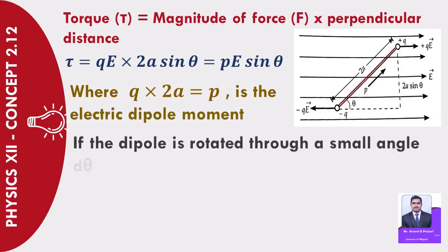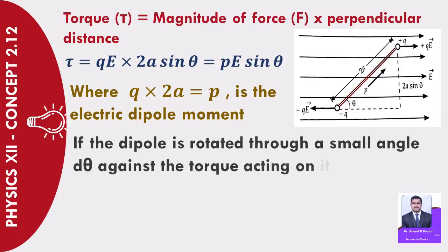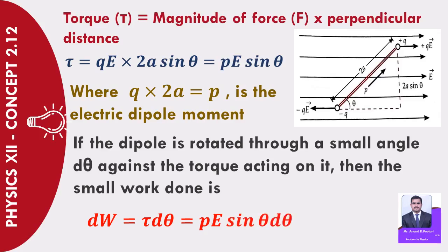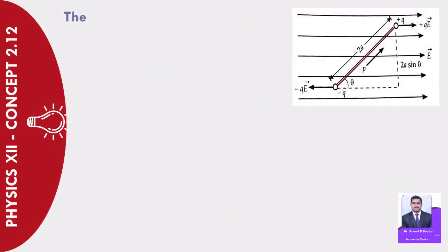If the dipole is rotated through a small angle dθ against the torque acting on it, then the small work done is dW = τ·dθ = PE·sin θ·dθ.